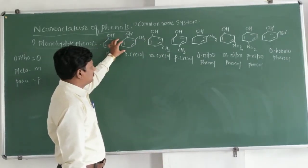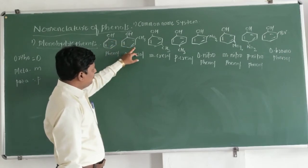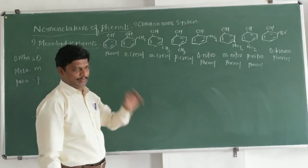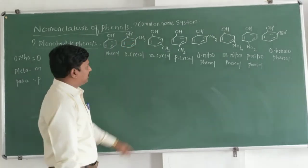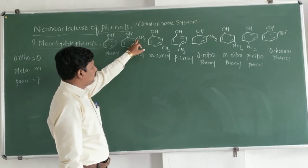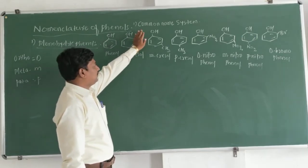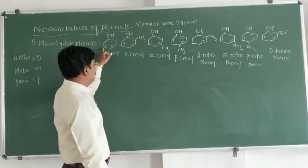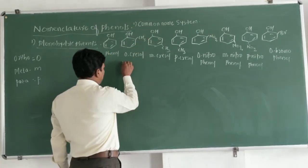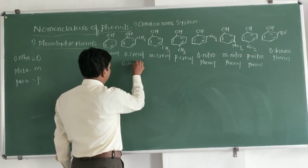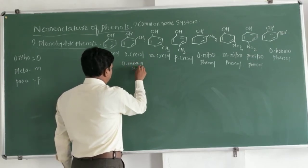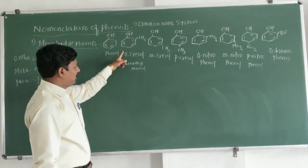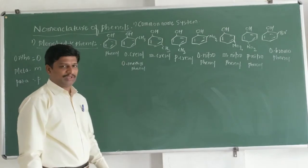If we observe this first structure, it clearly shows benzene with an OH group and a CH3 group. The parent compound is benzene with OH, which is phenol. According to our naming prefix, since the CH3 substituent is on the benzene, its common name is ortho-methylphenol. This name is also written as ortho-cresol — phenols are famous by these trivial names.